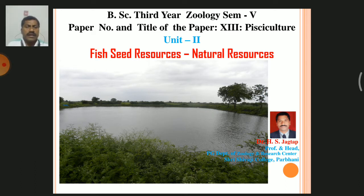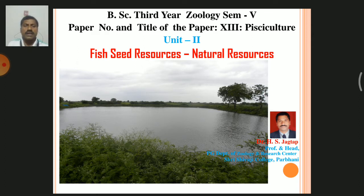Fish seed is required for culture purposes in artificial ponds. In the last lecture we studied various important indigenous and exotic carp fish species. Generally, those fishes are prepared for culture purposes in fish ponds, and the first requirement for their culture is the availability of quality seeds.